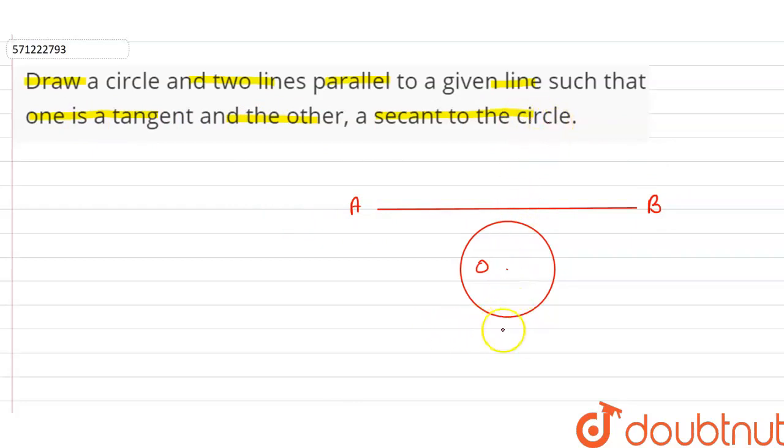What is the tangent of a circle? Tangent of a circle is a line which touches the circle at only one point.